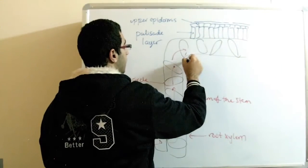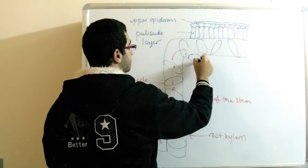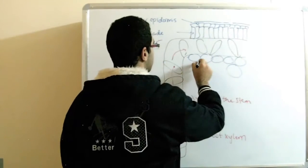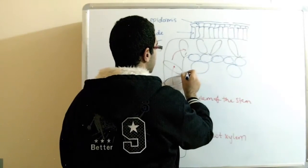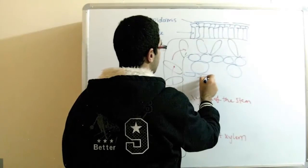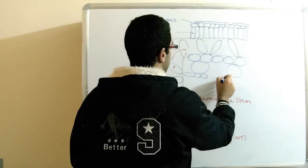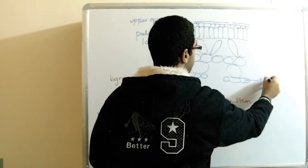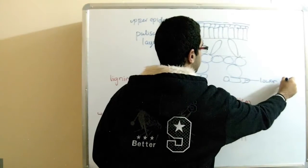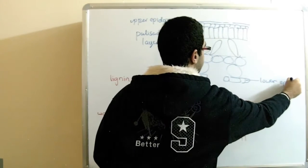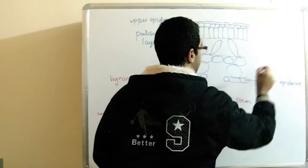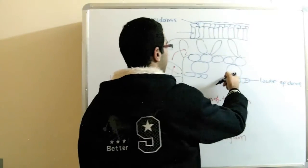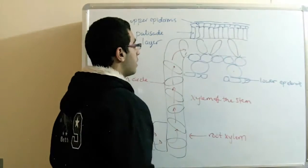And this upper epidermis is covered by a layer of cuticle. Beneath here we have spongy cells with the lower epidermis. Here we have these cells containing grana, fewer than the palisade layer.